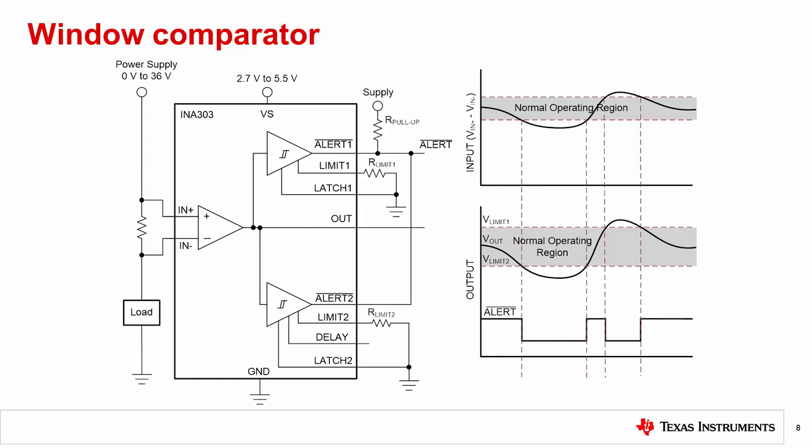Both the comparator outputs are connected together and pulled up to the supply through a pull-up resistor. Whenever the output of the current sense amplifier is outside the window, the composite comparator output will alert by pulling the voltage low.